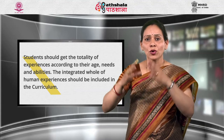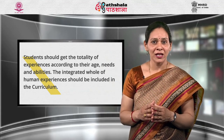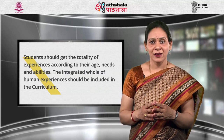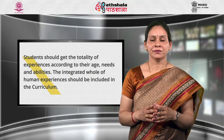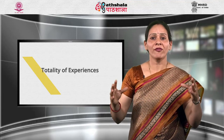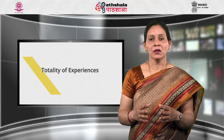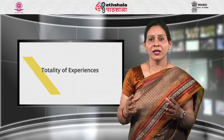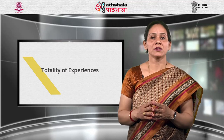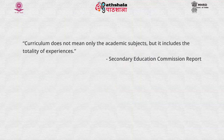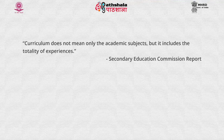Next is totality of experiences. Students should get the totality of experiences according to their age, needs and abilities. The integrated whole of human experiences should be included in the curriculum. Curriculum should include the sum total of various human experiences which a child receives in the school campus, classrooms, playground, library and laboratories along with academic subjects. Students also get experiences through various informal contacts with teachers. According to the secondary education commission report, curriculum does not mean only the academic subjects, but it includes the totality of experiences.